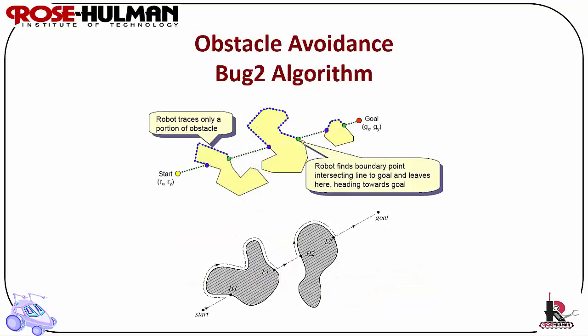Bug 2 is a bit more complicated than the Bug, but a more efficient way of arriving at the goal point. It follows the obstacle always on either the left or the right, and then leaves the obstacle if there is a direct connection between the start and goal. It has a significantly shorter travel time than the Bug algorithm.